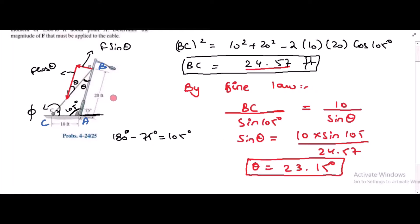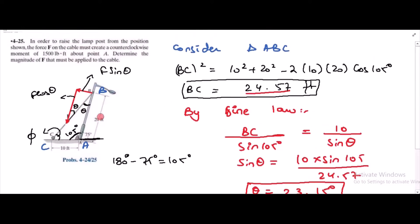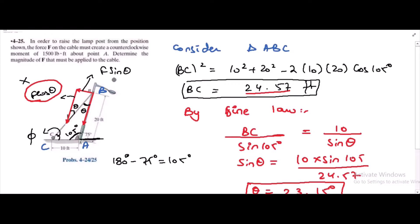Now we have found the value of theta. I have to check which component is producing the moment about point A. Looking at the figure, F cos theta — the component parallel to the pole — passes through point A, so it has no moment arm about point A and is not producing any moment. We are left with only one component, F sin theta, which is producing the moment about point A.